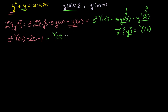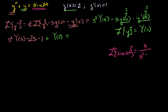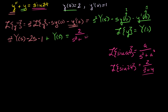And this is going to be equal to the Laplace transform of sine of 2t. The Laplace transform of sine of at is equal to a over s squared plus a squared. So the Laplace transform of sine of 2t, where a is 2, is 2 over s squared plus 4. So the right-hand side is 2 over s squared plus 4.